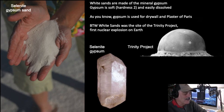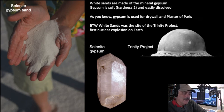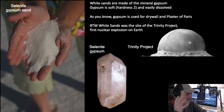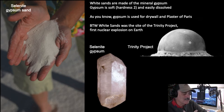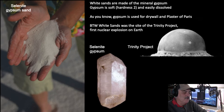When you fly over this area, all that selenite or gypsum has the capability of absorbing sound, like being in an anechoic chamber. That's actually why gypsum is used for wallboard — it absorbs sound between rooms in drywall.